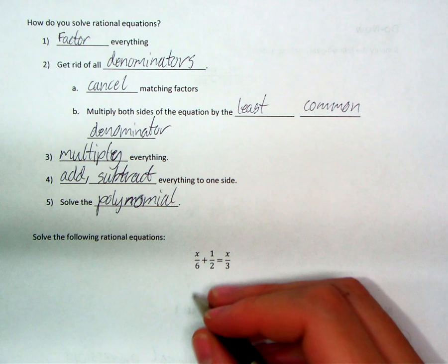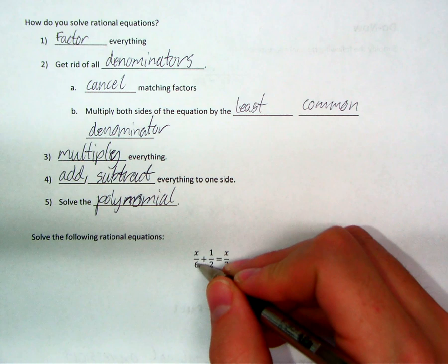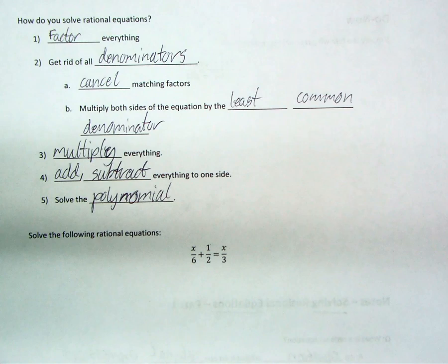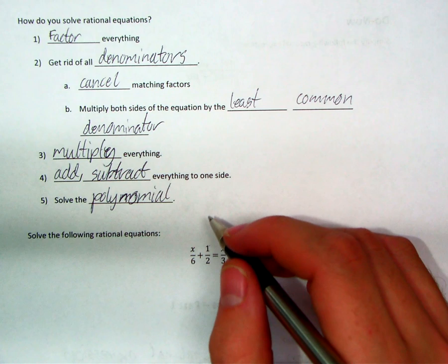So we're skipping right to the second step. And we want to cancel our denominator. We need to get rid of our denominators. Our denominators here are 6 and 2 and 3. It's the bottom number in the fractions. How do we get rid of them? We can cancel matching factors. Are there any matching factors in any of these fractions? I don't think so. There are not. They look all to be prime to me.